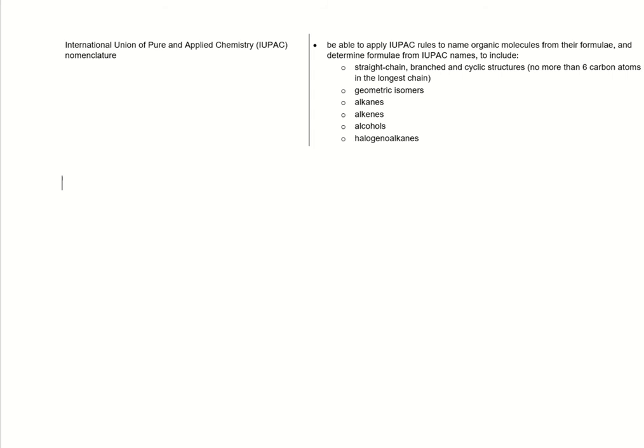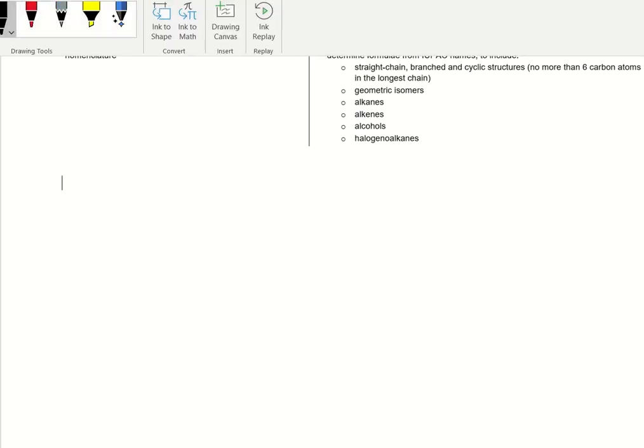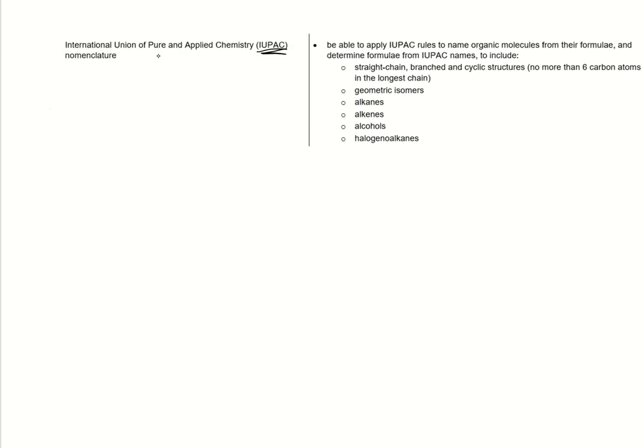Hi and welcome to this video for the BTEC Applied Science Level 3 Unit 5. We're going to be going through some nomenclature here, which is just a posh word for naming organic molecules. If you see the IUPAC thing as well, that just means follow the set of rules that we'll be going through. We've got to go through alkanes, alkenes, alcohols, and also the cyclic structures or cycloalkanes within that, and we've also got the branches.